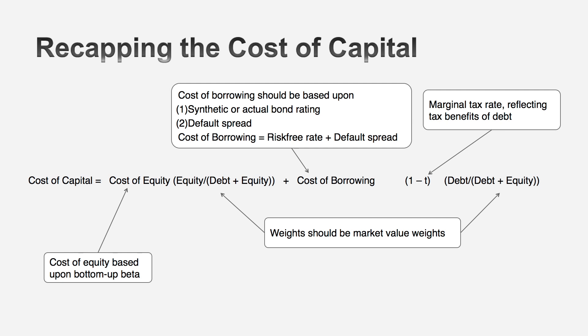To summarize: when estimating the cost of capital, first estimate the cost of each component — cost of equity, cost of debt, and if you have preferred stock, the cost of preferred stock. Then attach weights to those numbers, and those weights should generally be market value numbers — market value of equity, market value of debt, market value of preferred stock — making sure the weights add up to one. The result is a composite cost of financing your firm, a cost of capital, which you use as your discount rate when discounting cash flows to the entire business. Alternatively, if you discount cash flows to equity, you can use the cost of equity alone — but having all elements in place gives you a much better estimate of value.